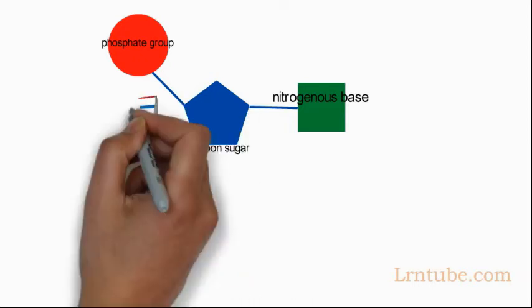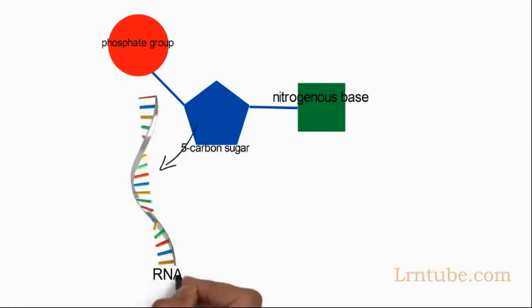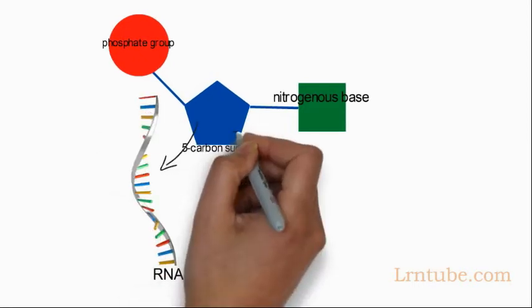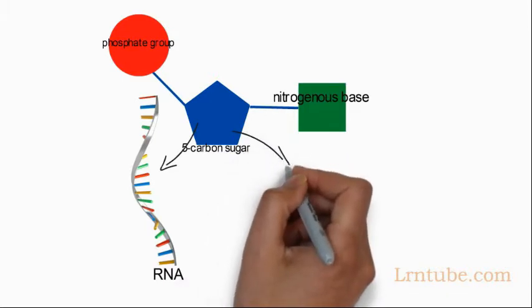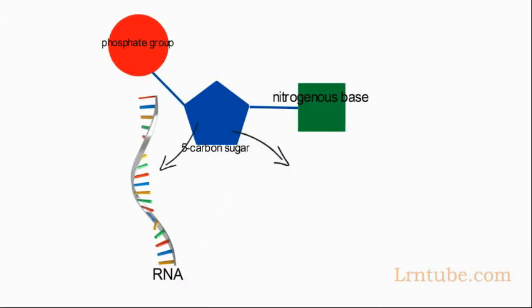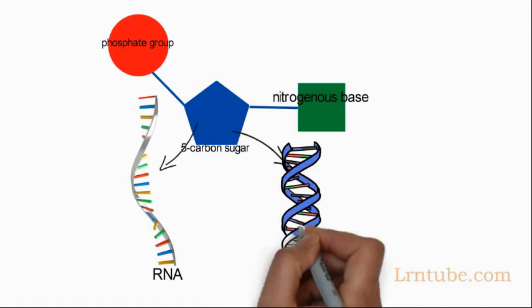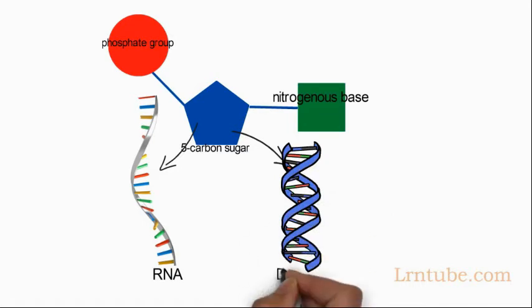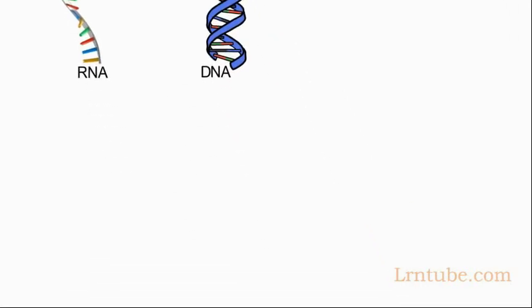If the sugar is a compound ribose, the polymer is RNA, that is ribonucleic acid. If the sugar is derived from ribose as a deoxyribose, the polymer is DNA, that is deoxyribonucleic acid.